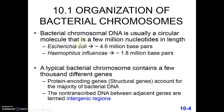Bacterial chromosomes can range in size. E. coli has about 4.6 million base pairs, while others may be much smaller. H. influenzae is only about 1.8 million base pairs. H. influenzae is a pathogenic species that cannot live in the environment, whereas E. coli can. E. coli consequently needs the ability to make a wide variety of things on its own. H. influenzae, living inside the human body, is supplied with everything it needs and therefore doesn't need to keep all the genes to make those things.